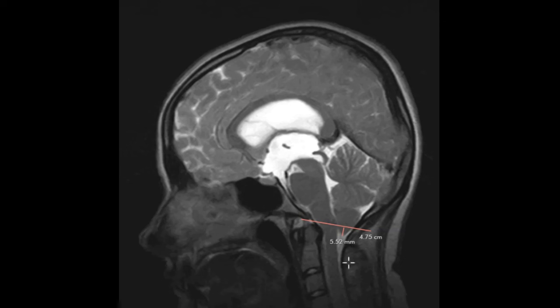We call it cerebellar tonsillar ectopia, or a Chiari malformation. This can be from a developmental abnormality where the posterior fossa, where the cerebellum sits, is just too small and it migrates down.